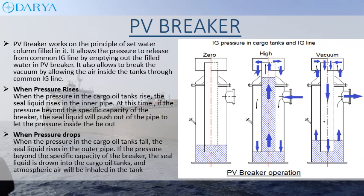When pressure rises in the cargo oil tanks, the seal liquid rises in the inner pipe. If the pressure exceeds the specific capacity of the breaker, the seal liquid will push out of the pipe to let the pressure out. When pressure drops, the seal liquid rises in the outer pipe; if the pressure drops beyond the specific capacity of the breaker, the seal liquid is drawn into the cargo oil tanks and atmospheric air will be inhaled into the tank.